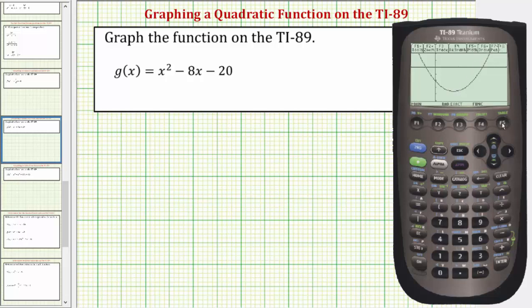Let's press F5 for math. Because it's a low point on the parabola, it's going to be a minimum. So we need to select option three for a minimum. Let's press three.